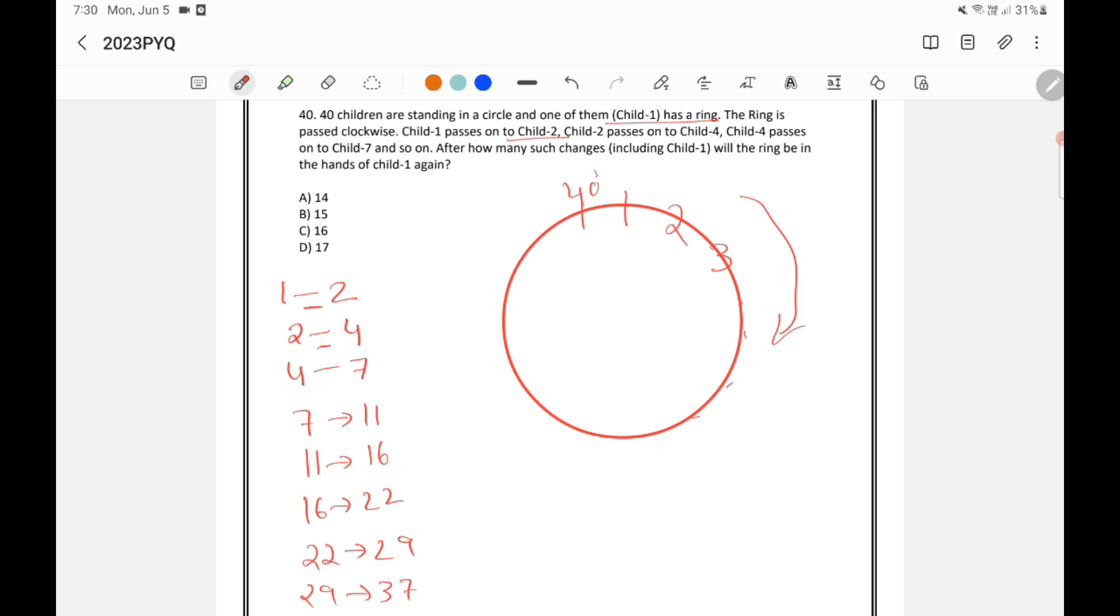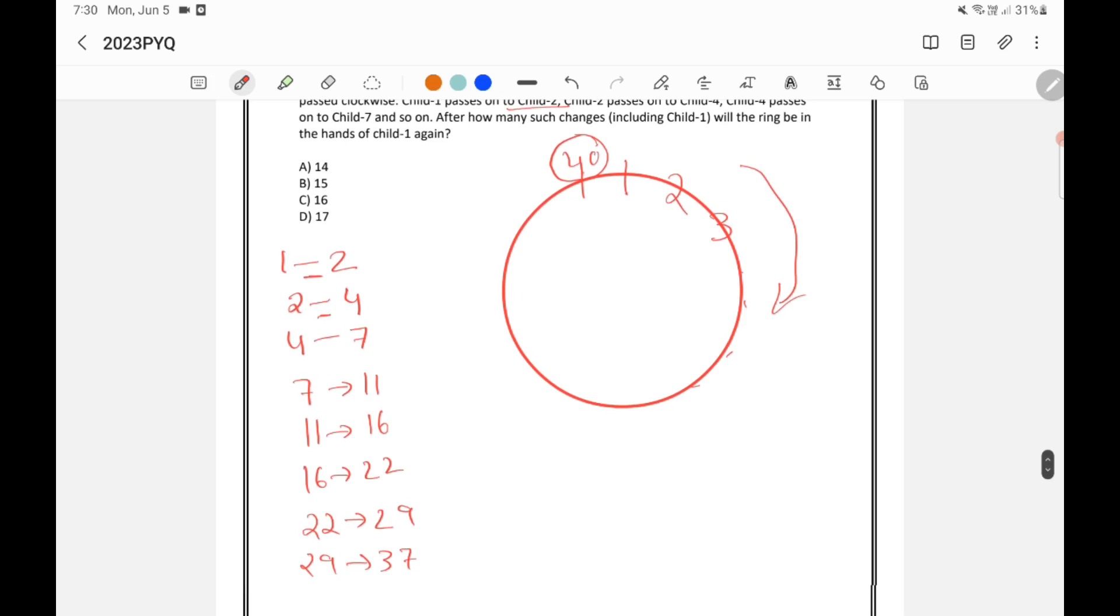After 37, we know that only 40 students are here. We have added 8 here. Next we need to add 9. So 37 plus 9 is 46. But we know that only 40 students are there. After 40, again 1, 2, 3, 4 will come. Because they are standing in a circle, 46 means actually it is the 6th person. We have added 9 and we got the 6th person.